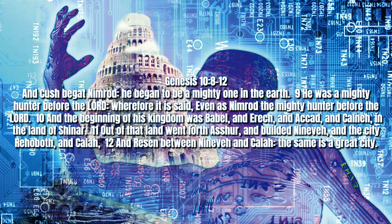Here in chapter 10 of Genesis, we are given the genealogy of each of Noah's three sons, and the dispersion of their descendants into 70 nations, covering actually a process of development and rapid increase of population under the Noahic Covenant, through a timeline that stretches from the days of Noah to the days of Abraham.